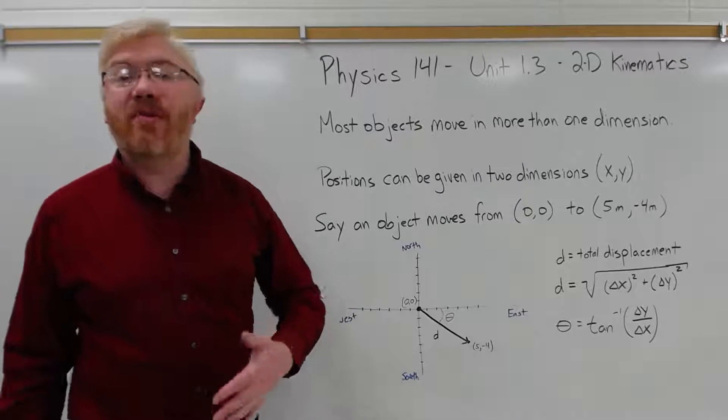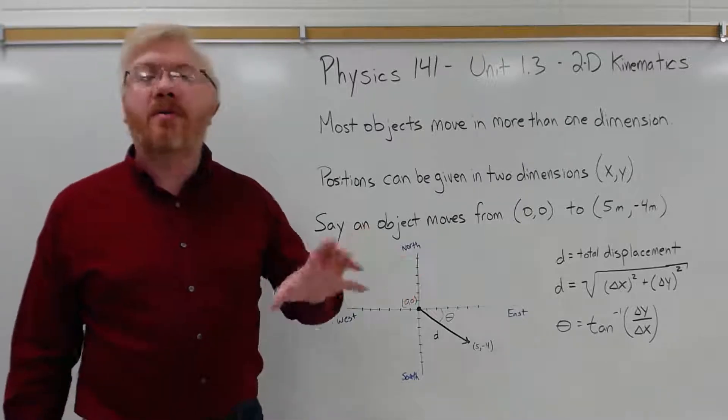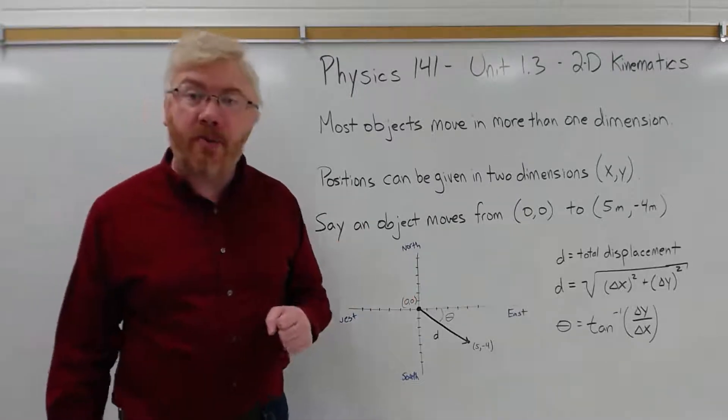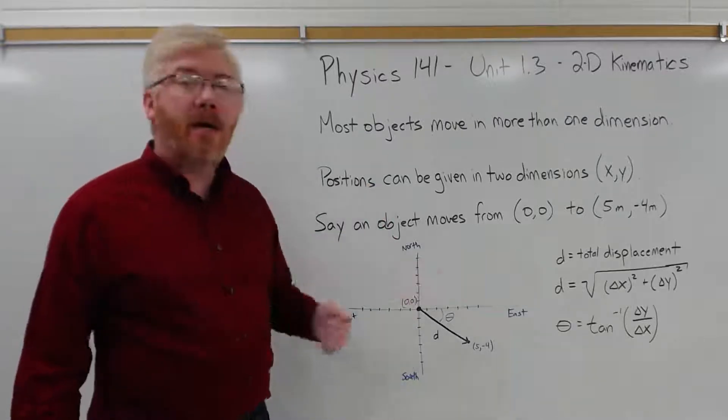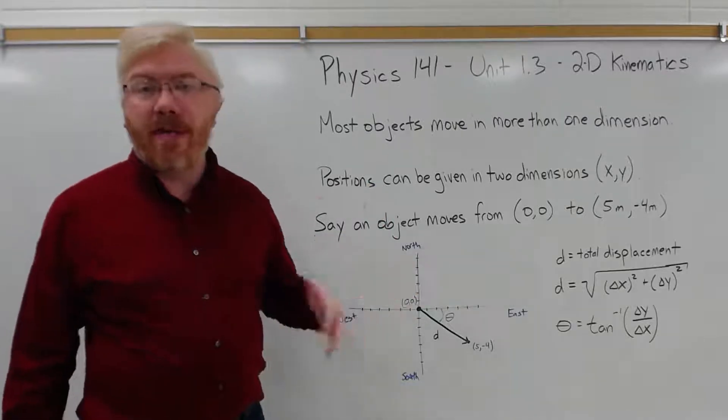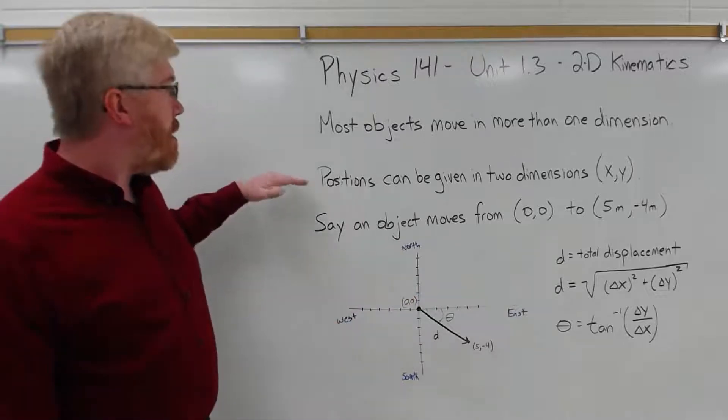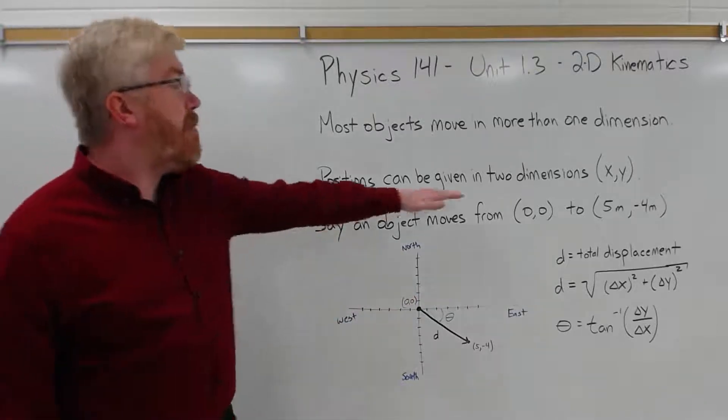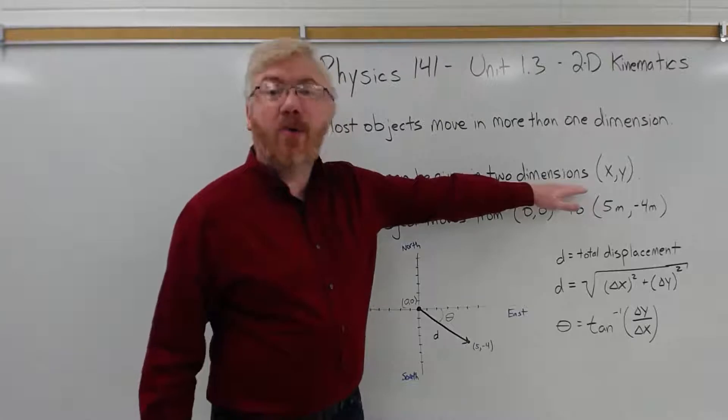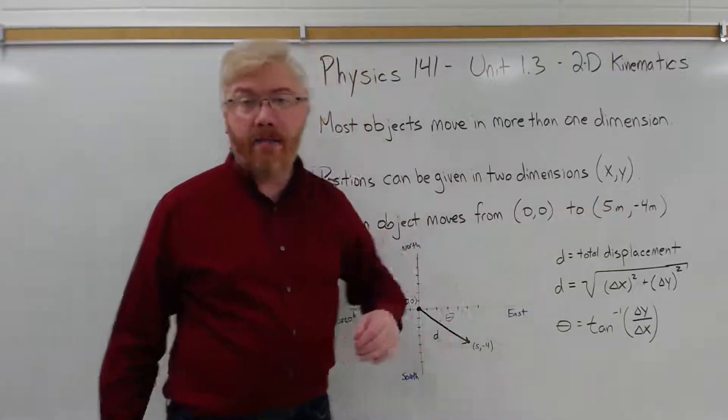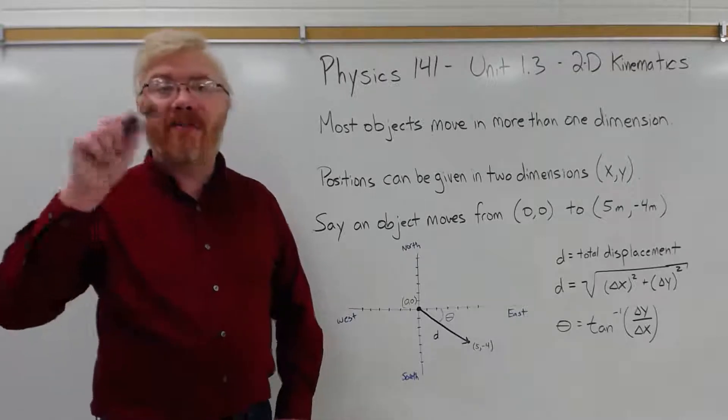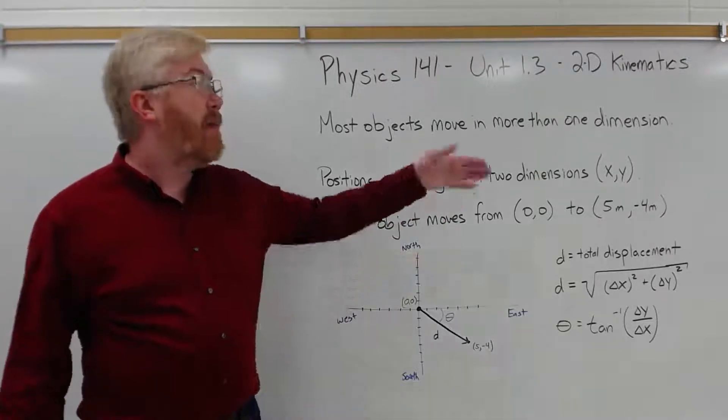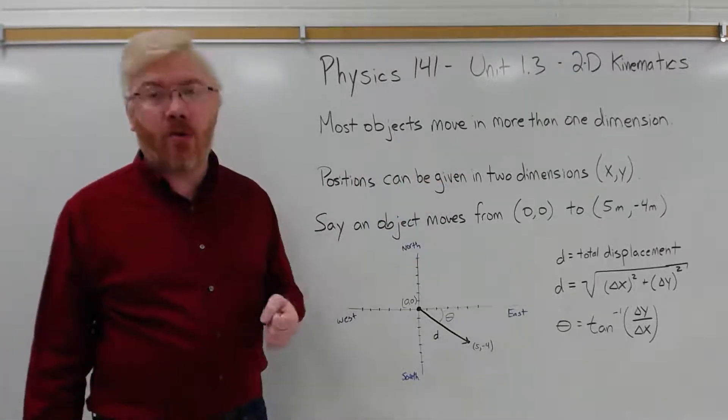In reality, of course, things do move in three dimensions, but we're going to focus in on just two-dimensional motion. Three-dimensional motion is just another expansion of this same argument, but in the third dimension or z-dimension. So positions can be given in two-dimensional coordinate systems, x, y. So you see parentheses with a 0, 1, or a 5, 3, or whatever. That means the position in those two coordinates.